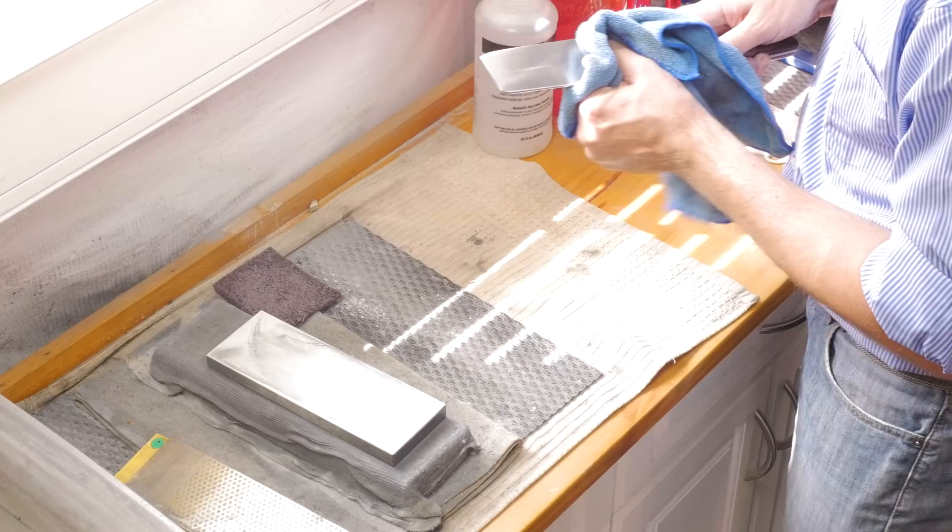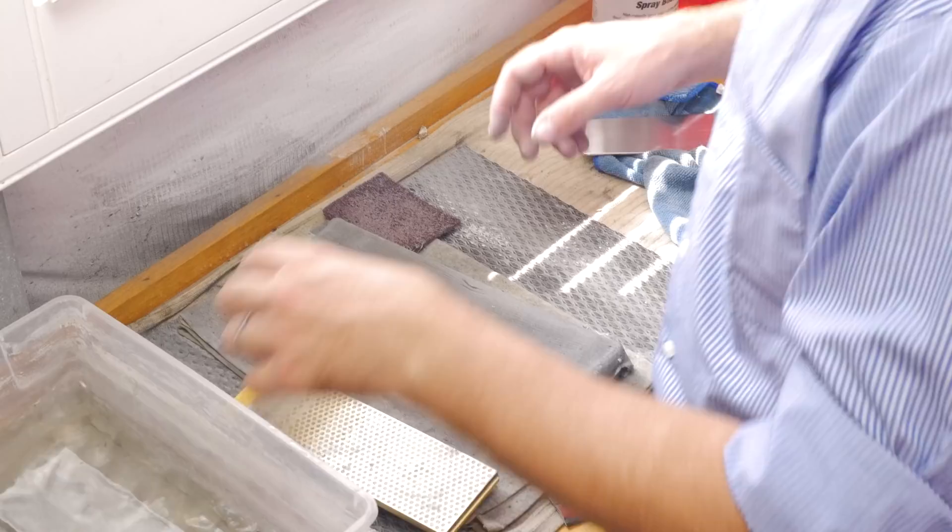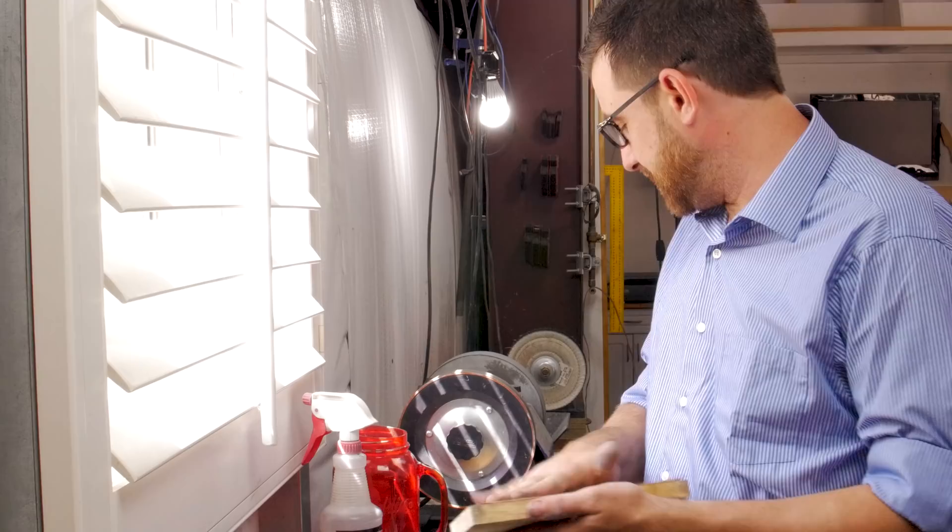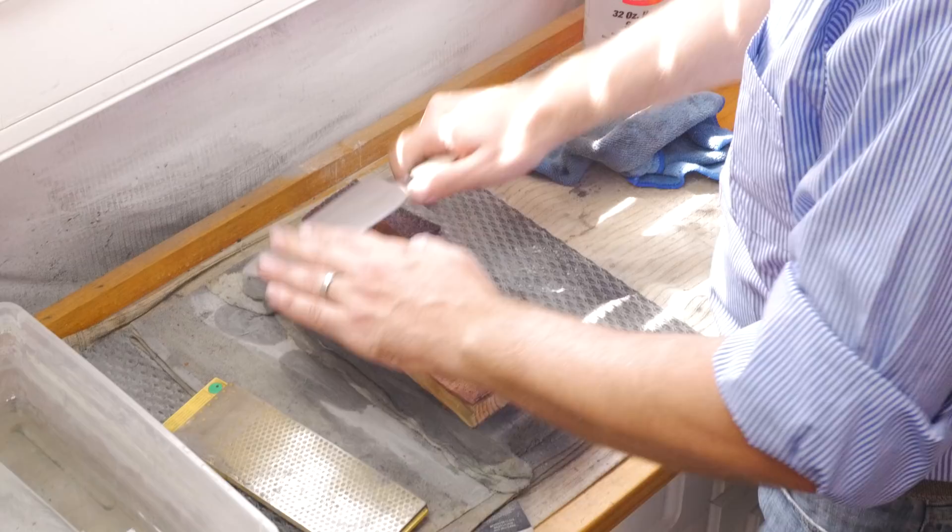The final step, put this back in the water. So I use, it's just a piece of leather on a board. Every once in a while I'll put some compound in it, but really it's just a way to remove the burr and refine the edge just one last time.